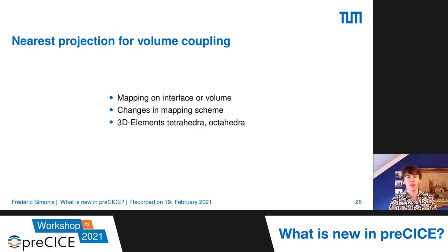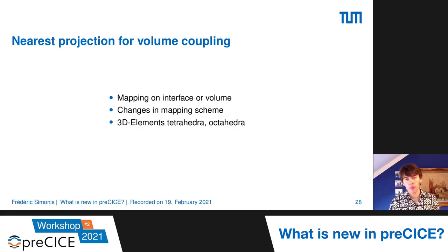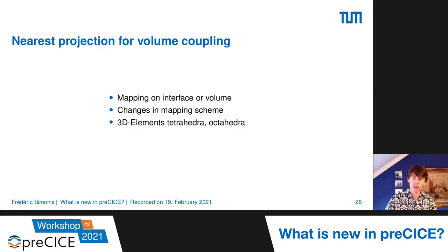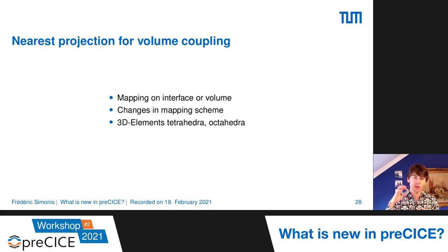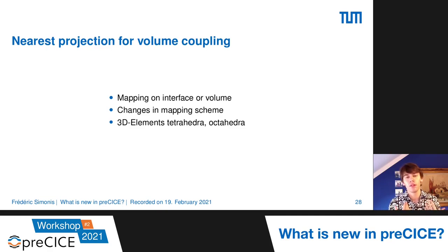This slide from the last workshop is about extending the nearest projection for volume coupling. Currently we map on interfaces — in a 3D setting, we map on 2D surfaces. What we would need is a 3D interface where we map onto 3D volumes. This involves many changes in the mapping scheme, and we would also need to add 3D elements like tetrahedral and octahedral.